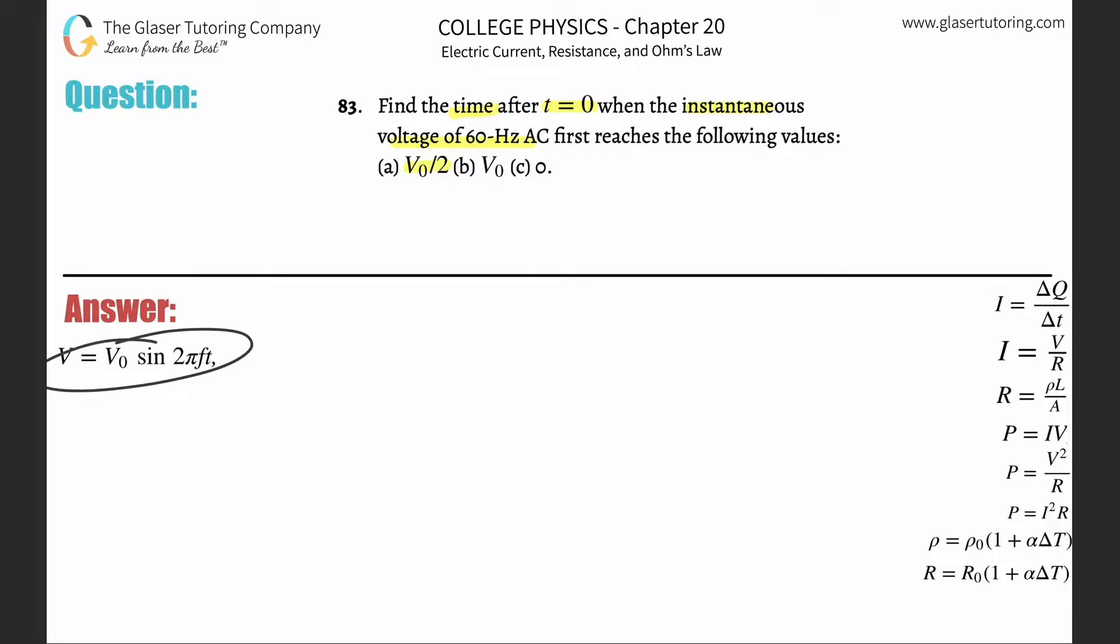Here's our formula that we're going to have to use. It's basically talking about the instantaneous voltage equals the initial voltage multiplied by the sine of 2 pi times the frequency multiplied by the time over which this thing is being operated.